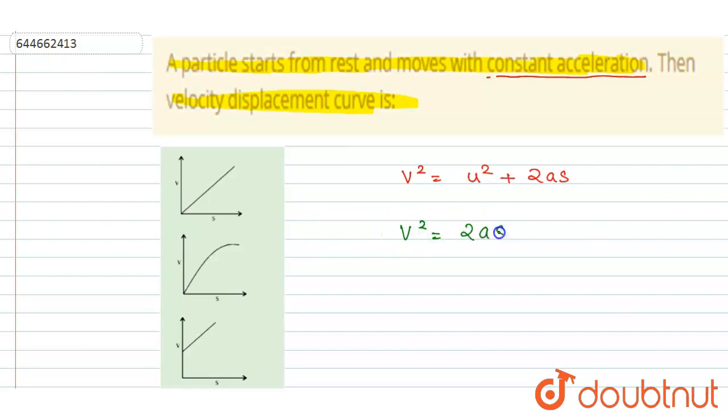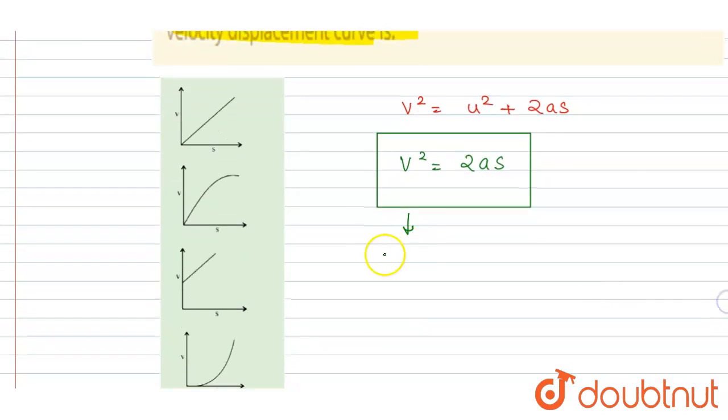So this is an equation of a parabola passing through the origin, upward facing parabola.